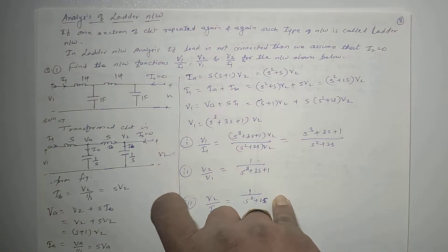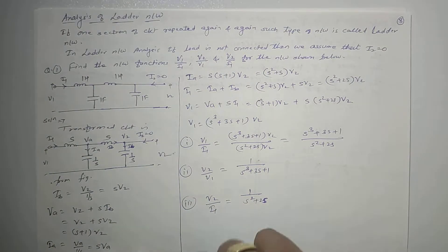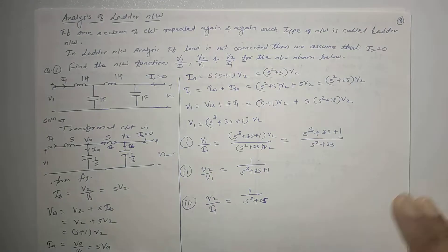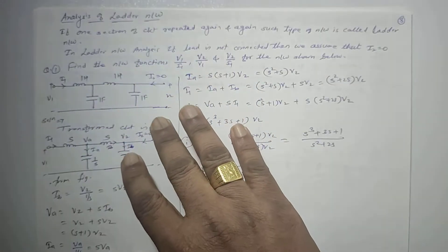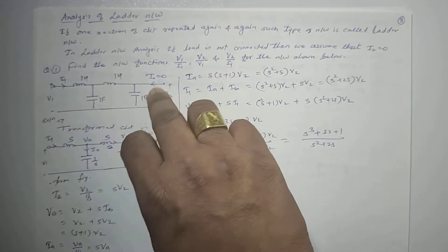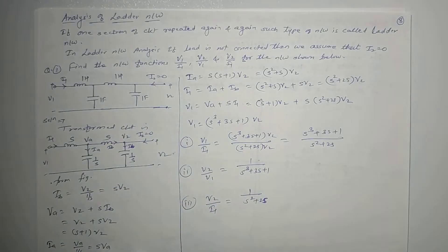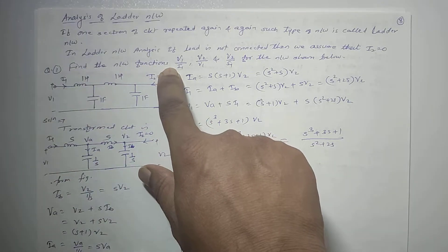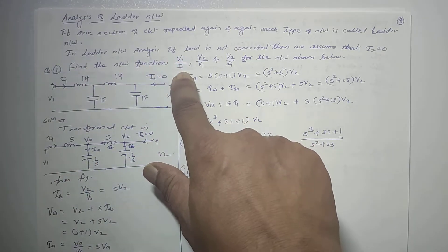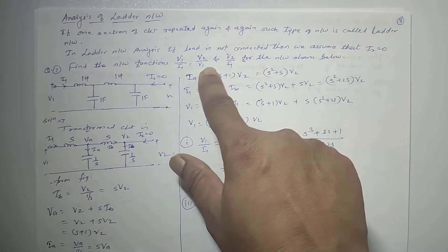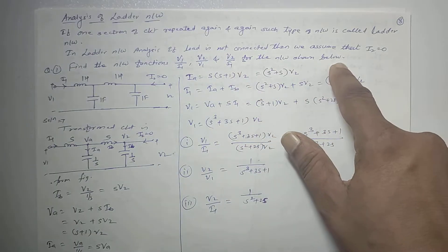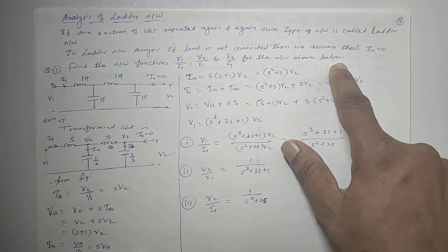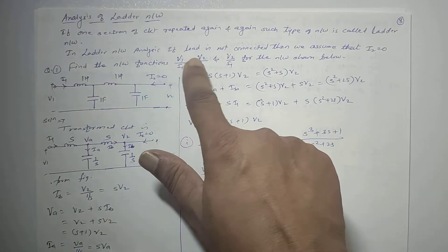We have to do the analysis of this ladder network. Analysis means we have to obtain various network functions — we have to find out various network functions. For example, find the network functions V1 upon I1, V2 upon V1, and V2 upon I1 for the network shown.